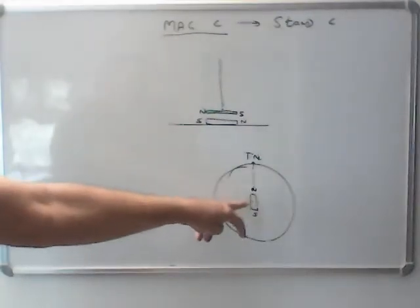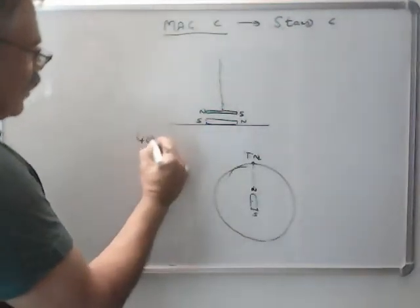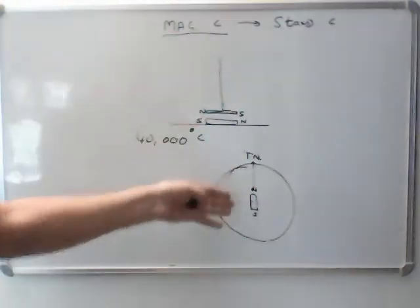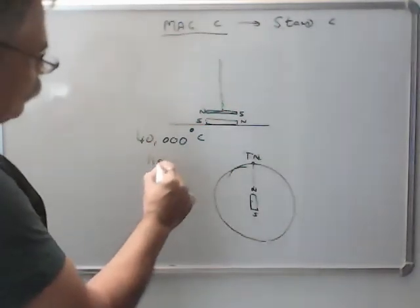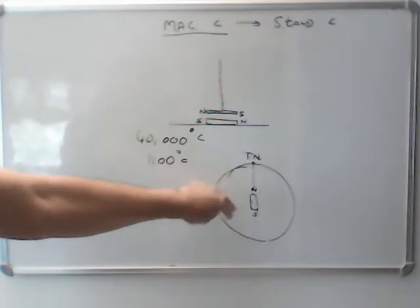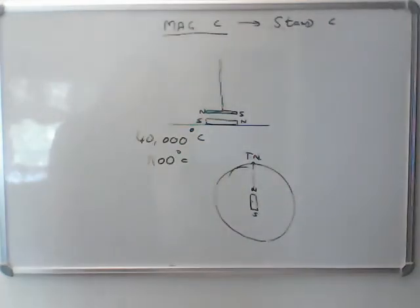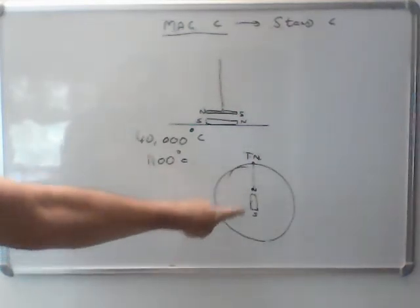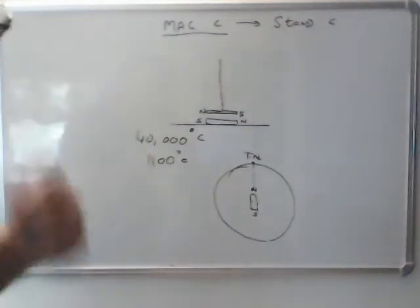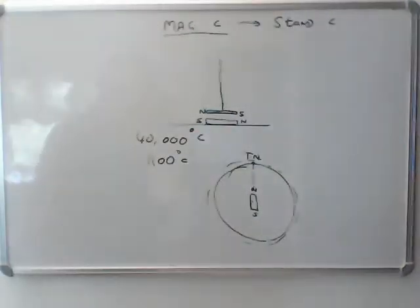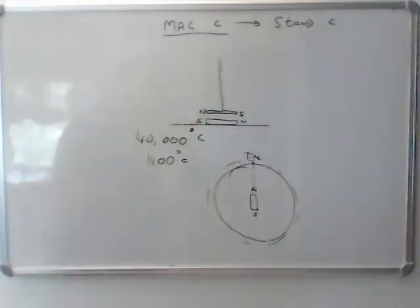Now at the center of the earth, the temperature is very high, 40,000 degrees centigrade, and melting point of steel is 1,100. So you cannot have a piece of steel or a magnet at the center of the earth, it will melt. But the earth behaves as if there is a short powerful bar magnet at the center of the earth, and this creates a magnetic field on the surface of the earth. So we can assume that there is a short powerful bar magnet at the center of the earth.